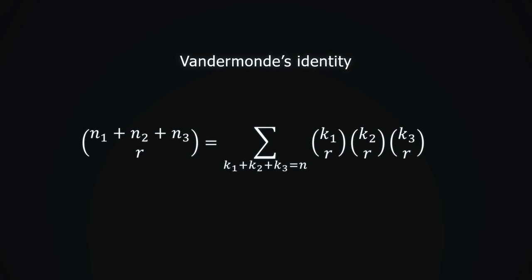We want to take r objects. By definition, there are n1 plus n2 plus n3 choose r possibilities for this. On the other hand, we can consider the colors of objects similar to last time and get the right hand side.